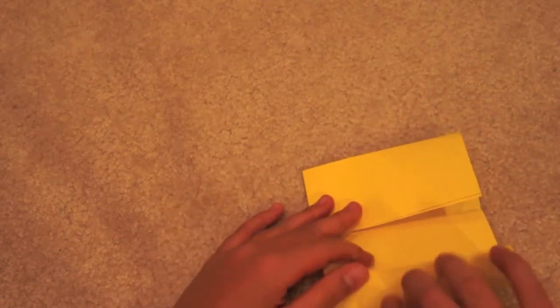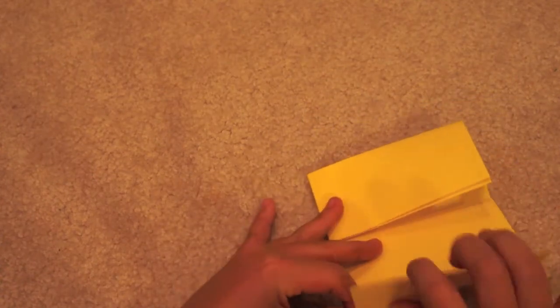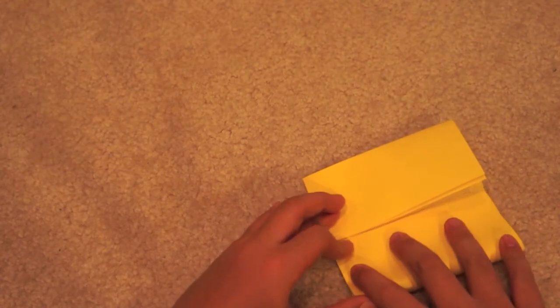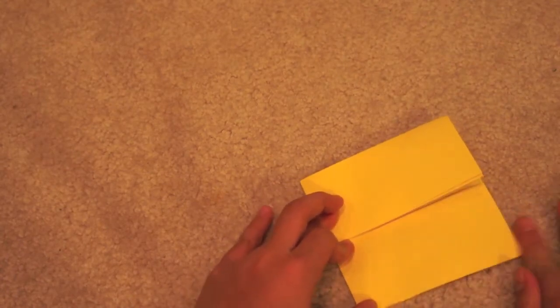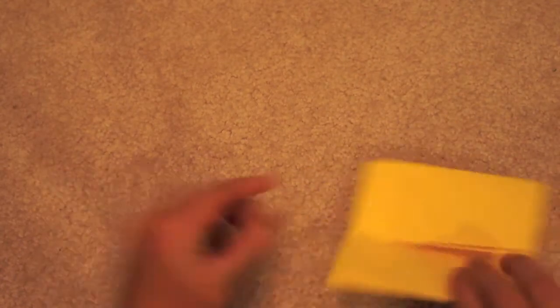After you fold in half twice, you take the edges and fold them towards the middle fold. Then you do that again for both sides. I'm sorry about it being cut off at the bottom. I was at a really bad position when I did that.